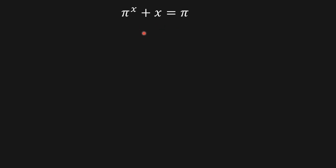To solve this I'm going to use the Lambert W function. The Lambert W function says that a times e to the a is equal to a — so we're going to make some transformations in order to have something similar to this on both sides of the equation.